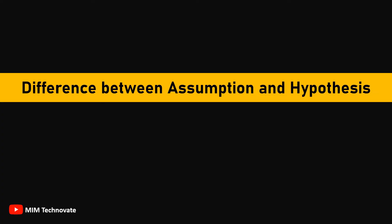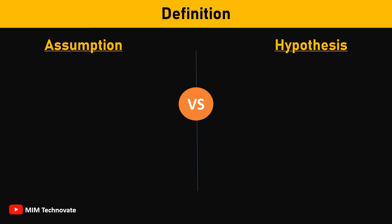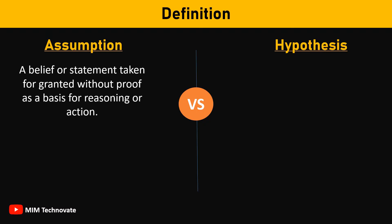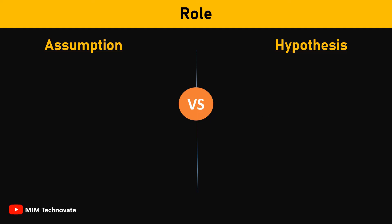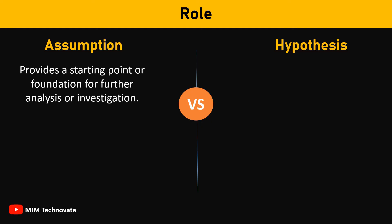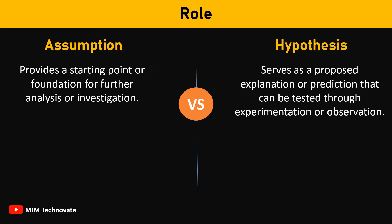Difference between Assumption and Hypothesis. An assumption is a belief or statement taken for granted without proof, used as a basis for reasoning or action. A hypothesis is an educated guess or proposed explanation based on limited evidence, which is subject to testing and verification. In terms of role, an assumption provides a starting point or foundation for further analysis or investigation, whereas a hypothesis serves as a proposed explanation or prediction that can be tested through experimentation or observation.